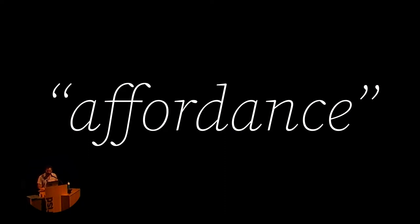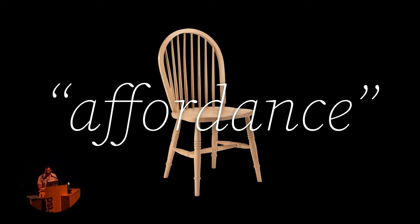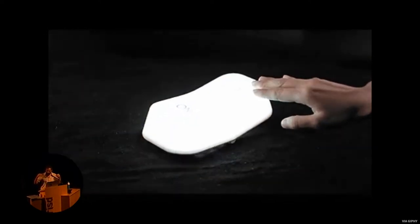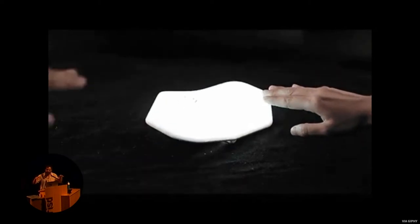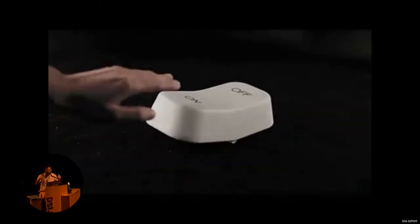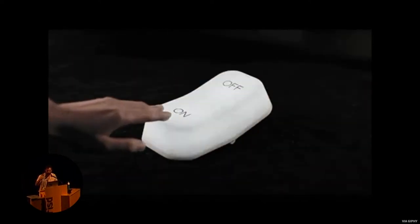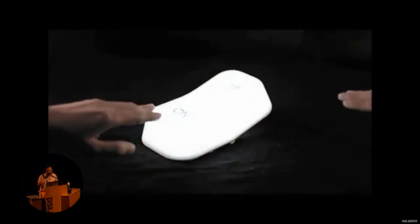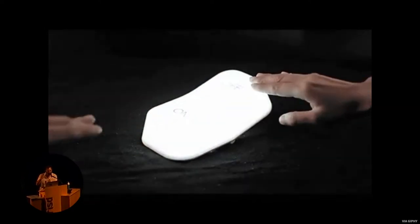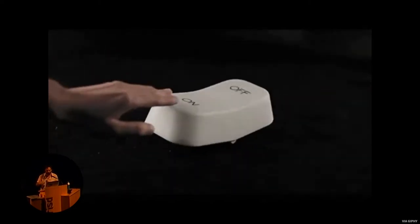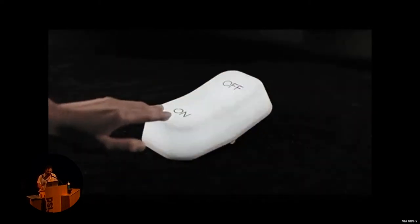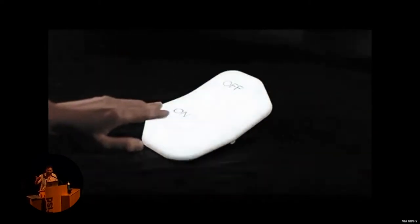In 1988, Don Norman introduced affordances to design to discuss, for example, how a chair may afford sitting, standing on to switch a light bulb, and smashing on somebody's head. Electric affordances are abstract - it starts from the fundamental abstraction of electricity. We're not actually flowing the electricity into the system; we are affecting the closing of the circuit. That is already a first step of abstraction: zero and one, off and on. To understand them, we depend on a representative layer.